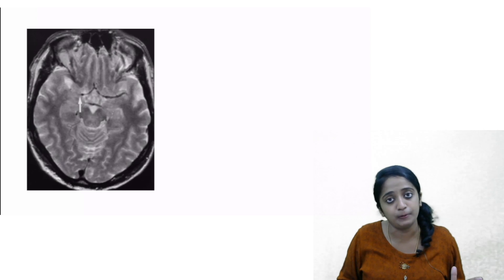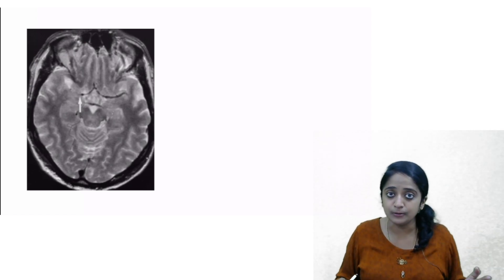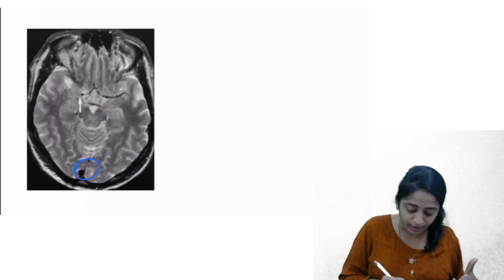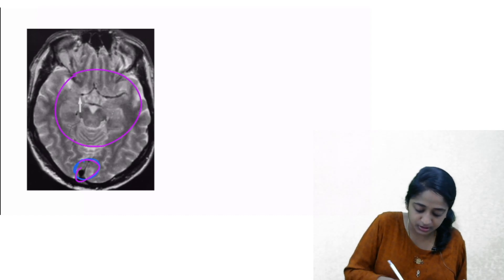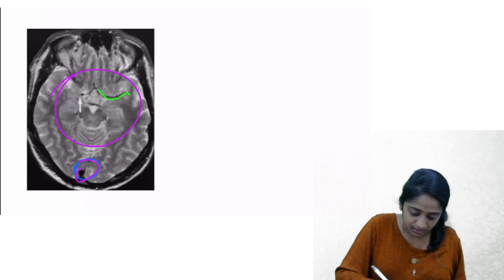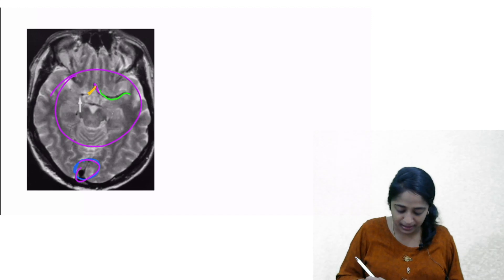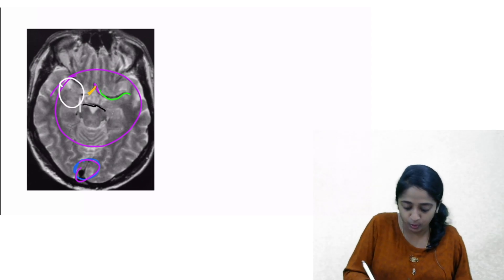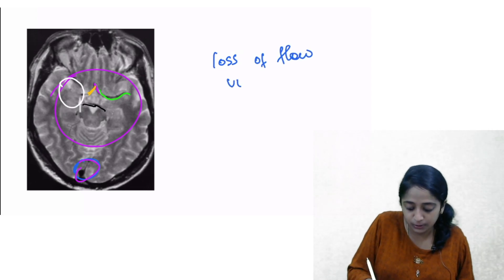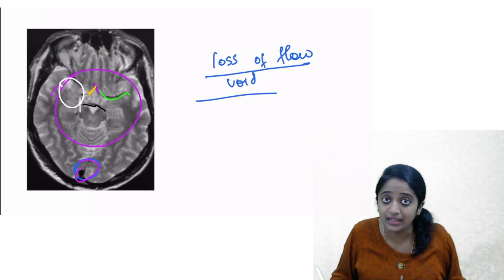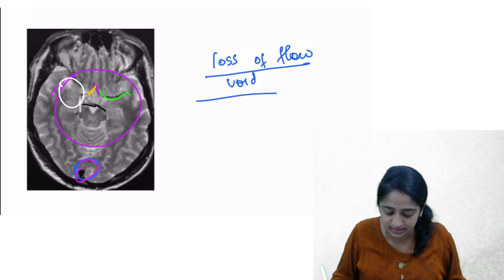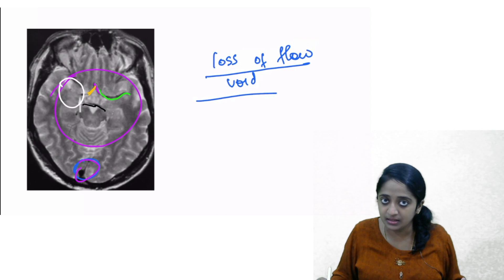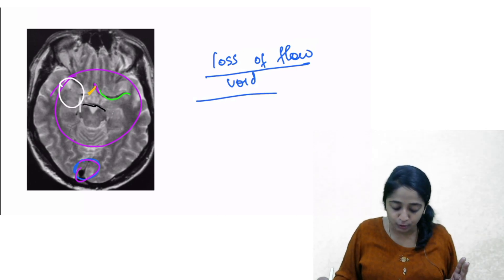The second sign in FLAIR was the hyperintense vessel sign. The corresponding sign in T2-weighted imaging is loss of flow void. How should vessels appear in T2? They should be black — flow voids. The superior sagittal sinus is black; left MCA is black; left ACA is black; right ACA is black; posterior cerebral vessels are black. But the right MCA — it is not seen. There is loss of flow void, which is an indirect sign of abnormality in that vessel. This is the counterpart of the hyperintense vessel sign in FLAIR.